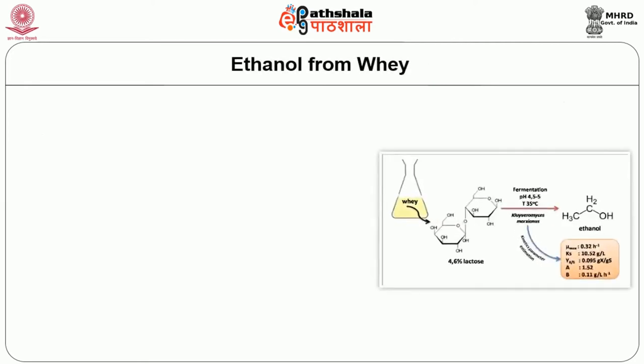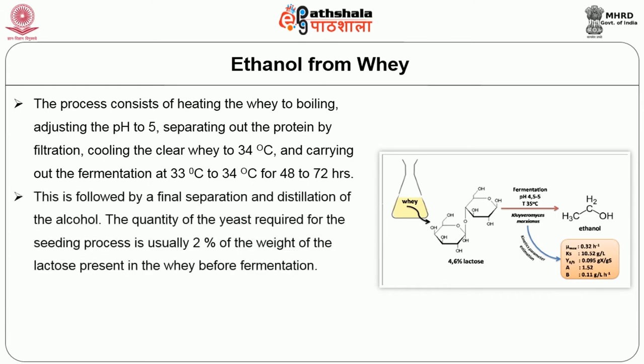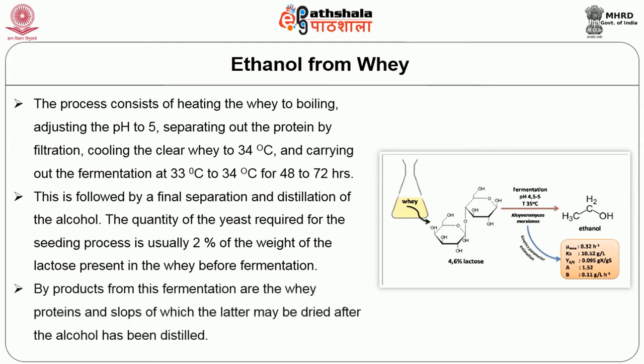Next, we are going to see how ethanol is made from whey. The process consists of heating the whey to boiling, adjusting the pH to 5, separating out the protein by filtration, cooling the clear whey to 34 degrees centigrade, and carrying out fermentation at 33 to 34 degrees centigrade for 48 to 72 hours. This is followed by final separation and distillation of the alcohol. The quantity of yeast required for seeding is usually 2% of the weight of lactose present in the whey before fermentation. Byproducts include whey proteins and slopes, of which the latter may be dried after the alcohol has been distilled.